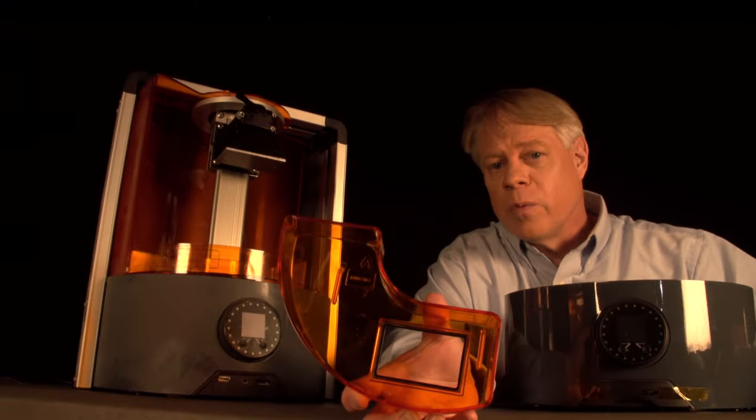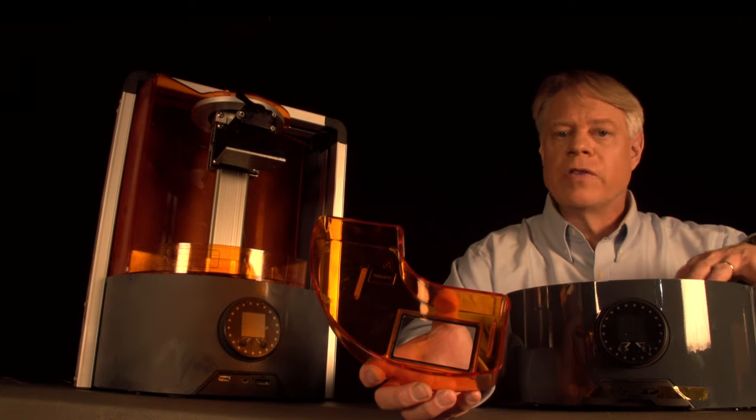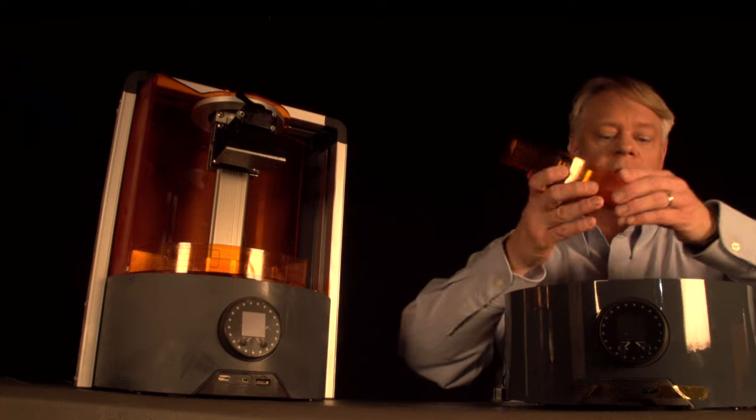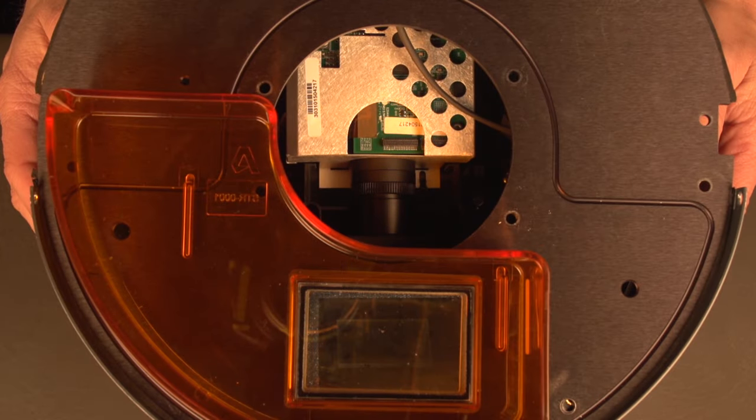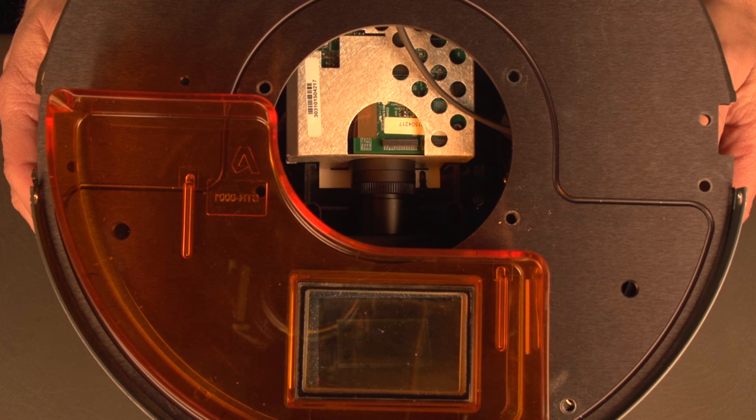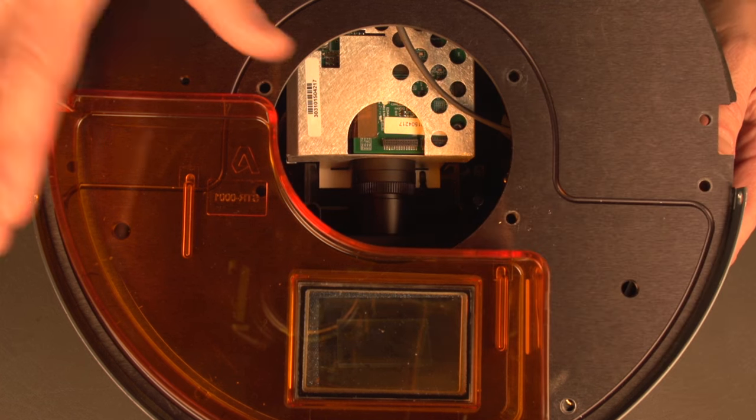The tray has a clear window so light flashes can cure a layer. This is the base from a printer we took apart, so I can show you what's inside. Sitting on the base is the amber tray that contains the resin. Note that the silicone-coated window of the tray is positioned over a window in the base.